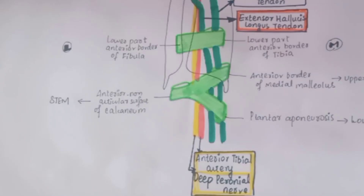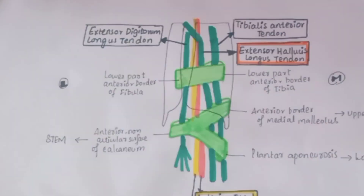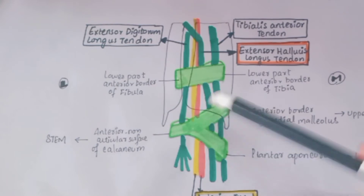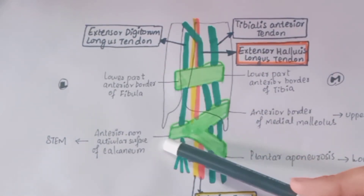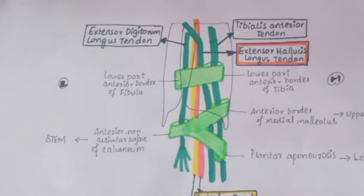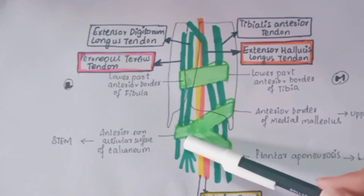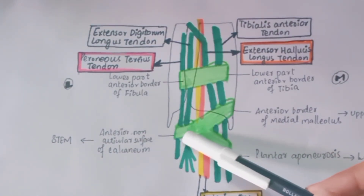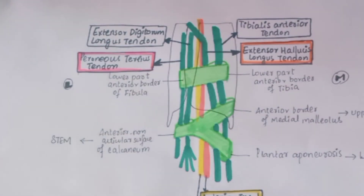Next come the anterior tibial artery and the deep peroneal nerve. Both these structures are not enclosed by any of the retinaculum — they pass deep to both the superior and inferior extensor retinaculum. The next structure is the extensor digitorum longus tendon, which is enclosed by the stem of the inferior extensor retinaculum and passes deep to the superior extensor retinaculum. The last structure is the peroneus tertius tendon, which is also enclosed by the stem of the inferior extensor retinaculum and passes deep to the superior extensor retinaculum.